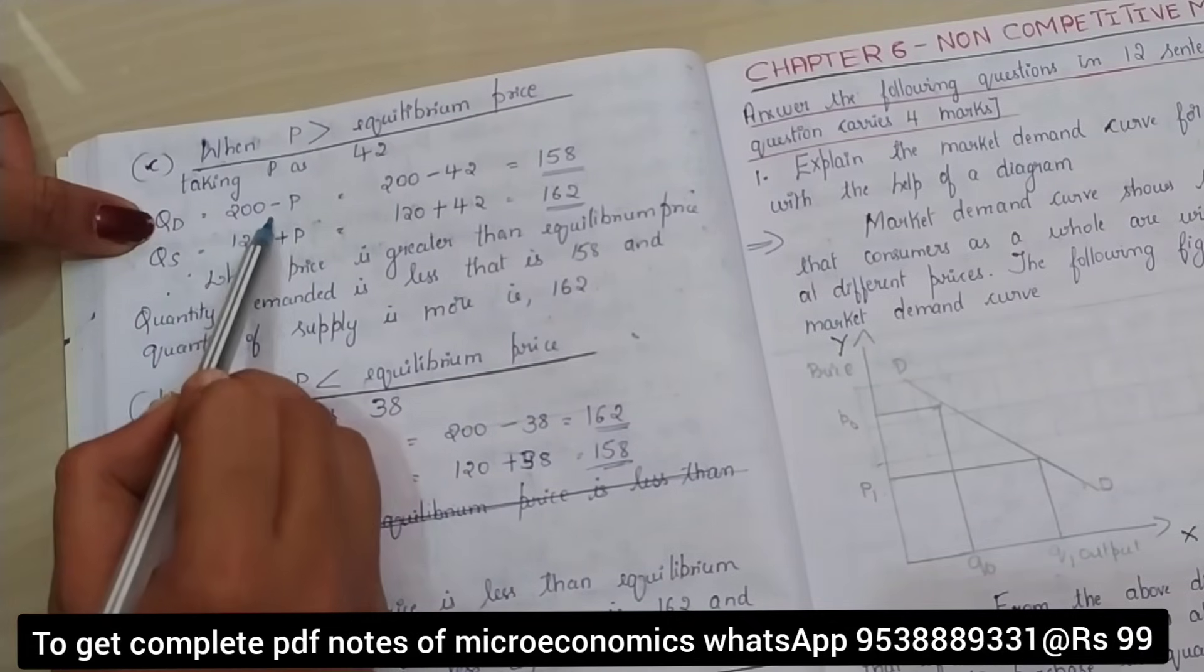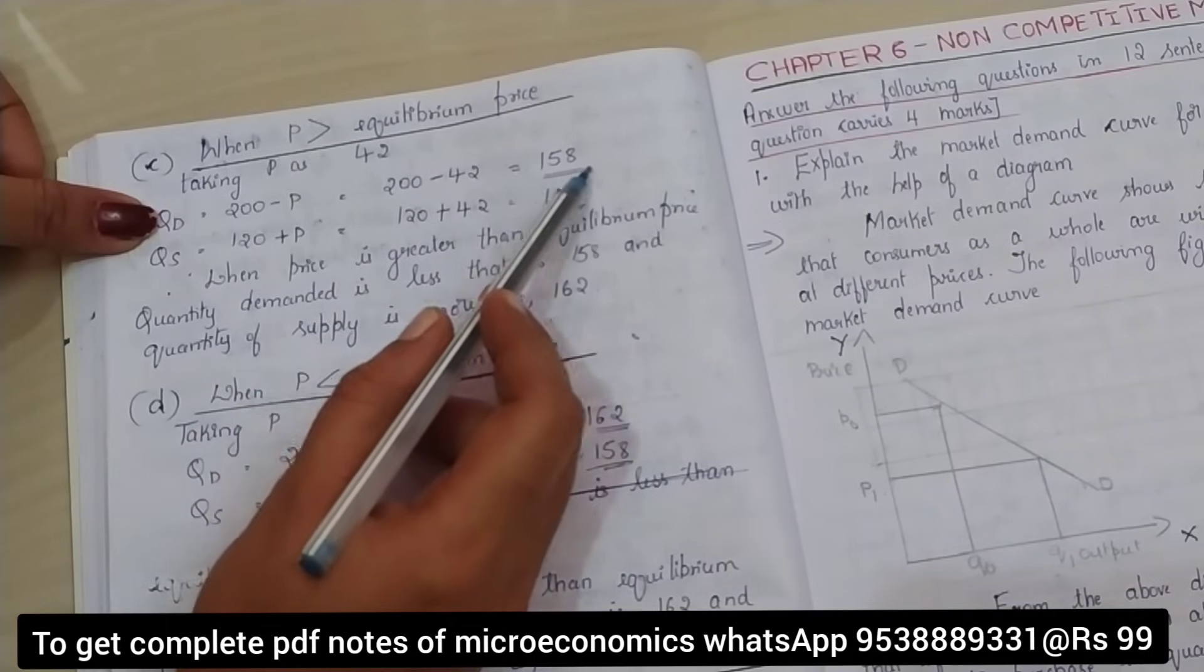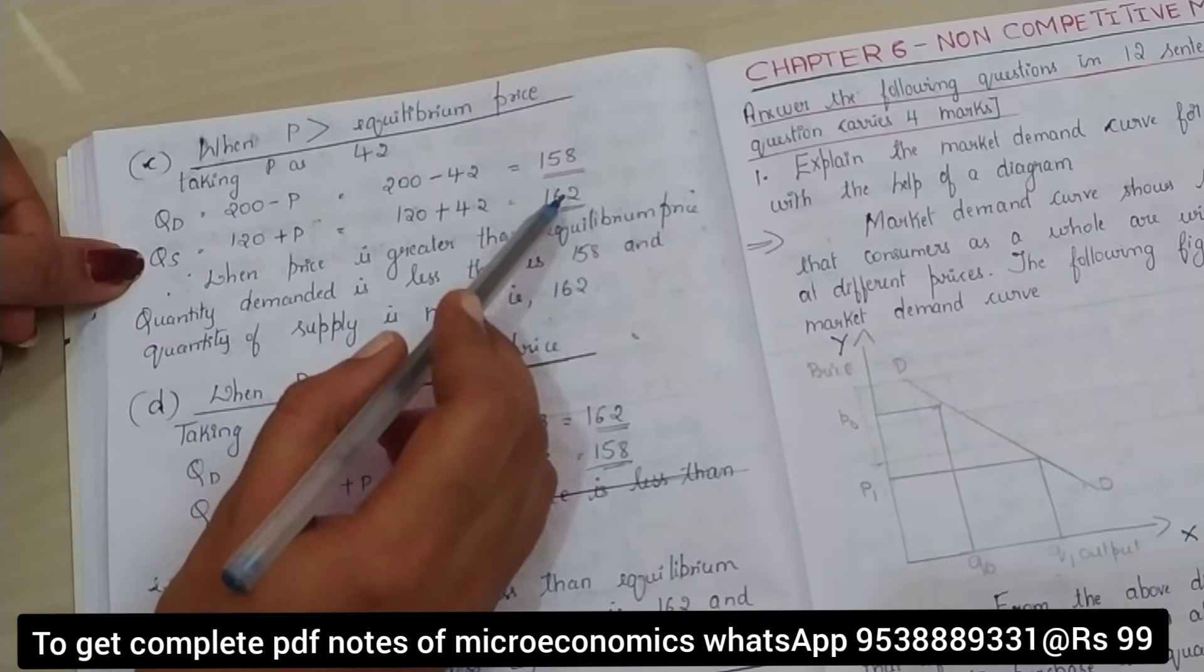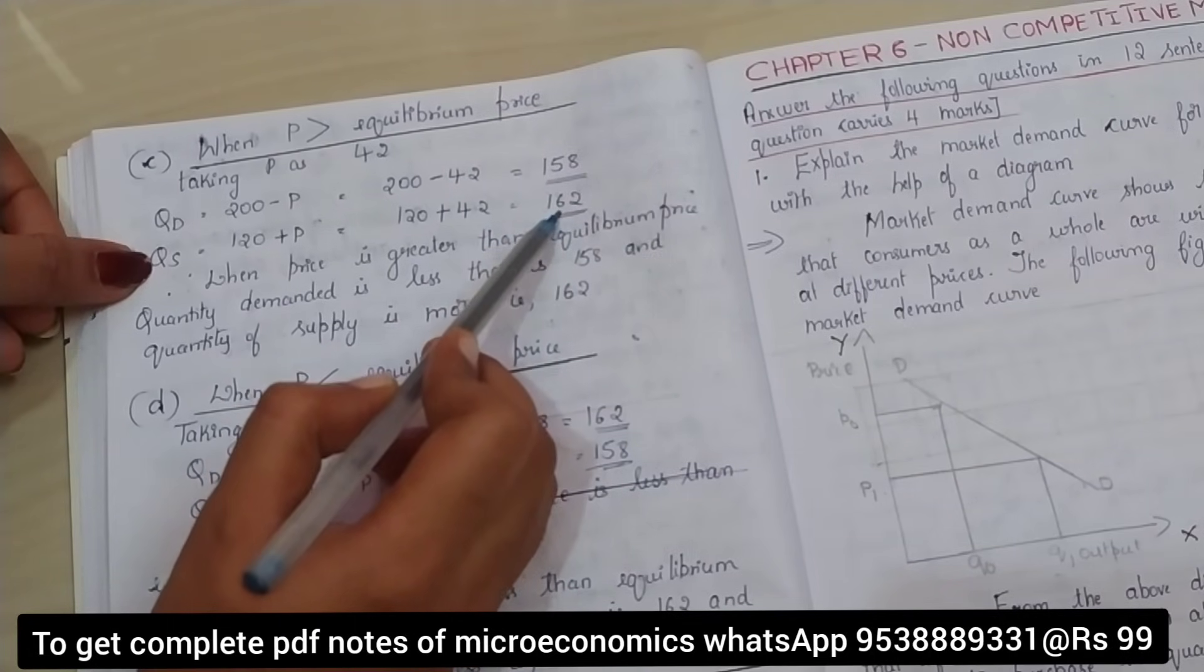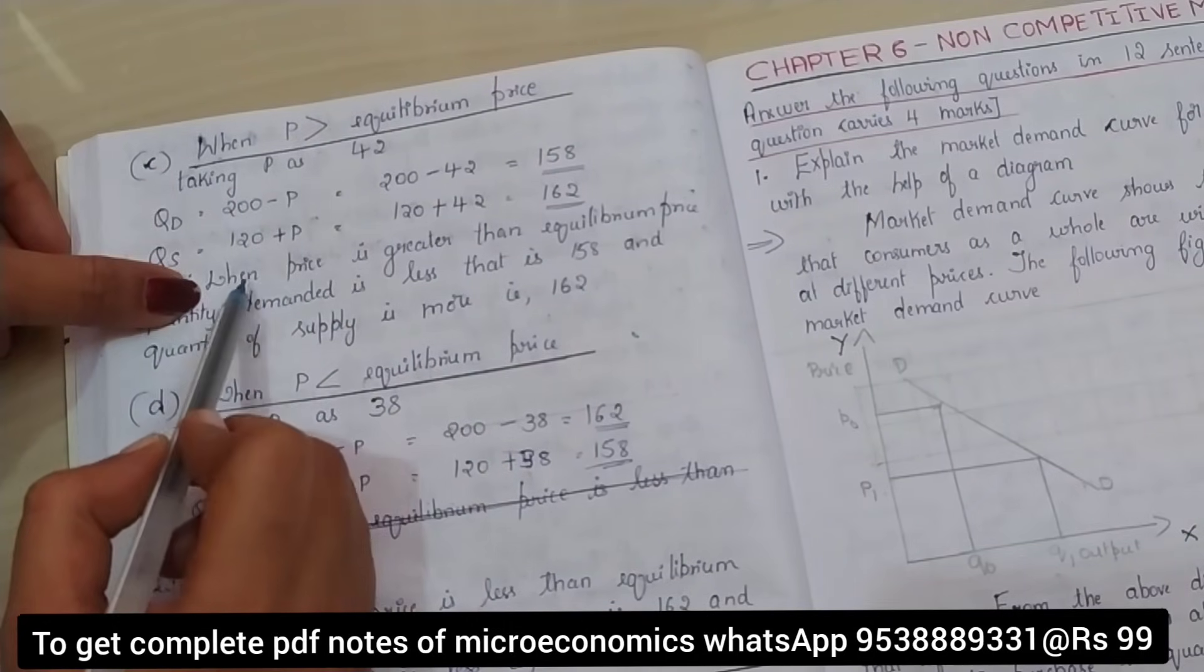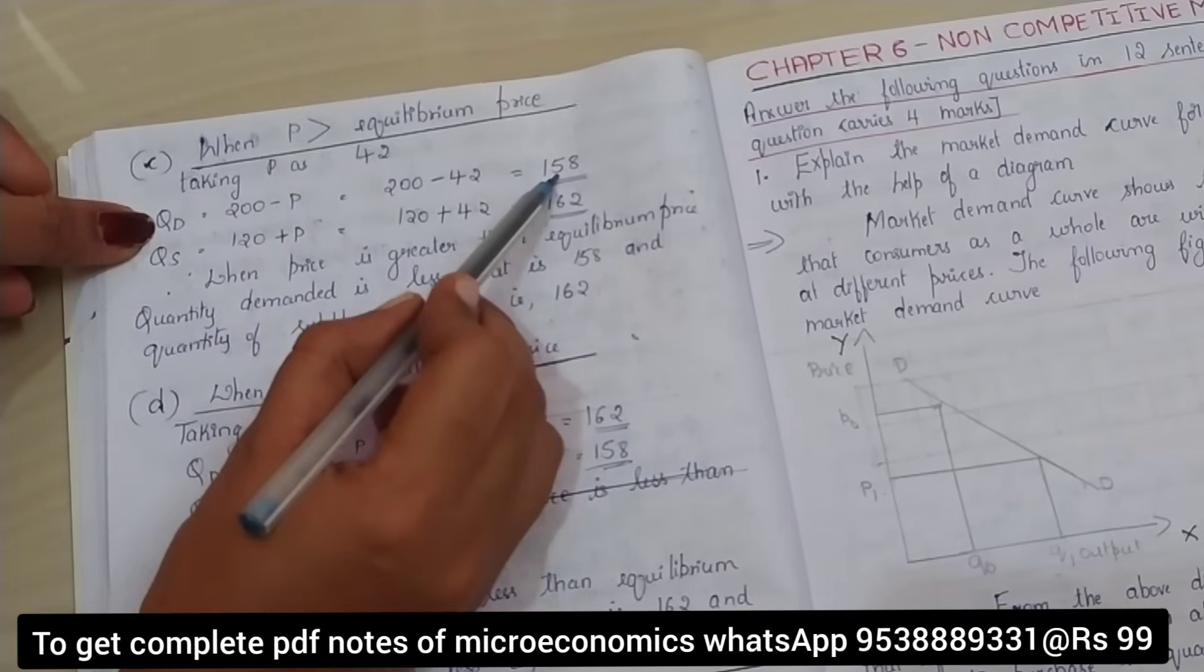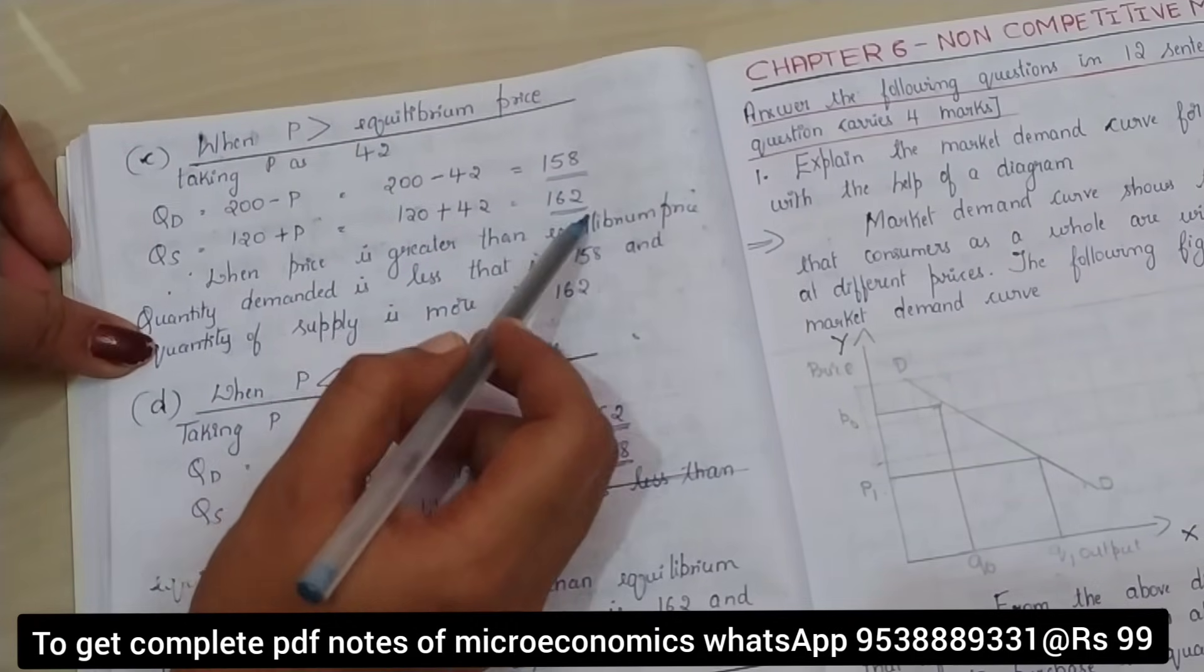Let's see what quantity demanded will be: 200 minus 42, that is equal to 158. Now, quantity supplied equation is 120 plus P. So 120 plus 42, quantity supplied becomes 162. Which means quantity demanded and quantity supplied is not the same. Therefore, when price is greater than the equilibrium price, quantity demanded is less, that is 158, and quantity of supply is more, that is 162.